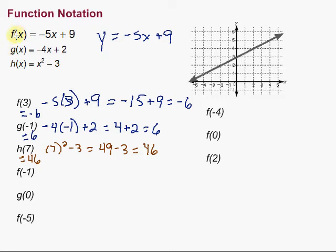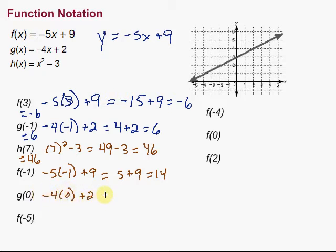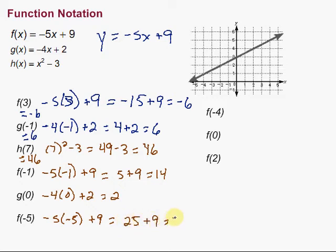And another one: f of negative 1 means we put negative 1 in for x in our first expression. So negative 5 times negative 1 plus 9 — multiply those two, we get 5 plus 9, which is 14. Next, g of 0 means we put 0 in for x: negative 4 times 0 plus 2 equals 0 plus 2, which is 2. Finally, f of negative 5 means we put negative 5 in for x: negative 5 times negative 5 plus 9 equals 25 plus 9, which is 34. So f of negative 5 is 34.